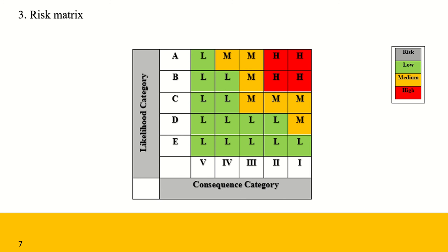A risk matrix is used to combine the likelihood and consequence rating to generate initial priorities for the risk. An example with three priority levels is shown here, including low, medium, and high risk levels. We use a five-point scale for consequence and likelihood in most circumstances, as they are simple to comprehend, easy to use in a workshop environment, and provide adequate discrimination.